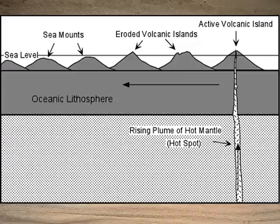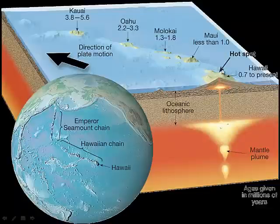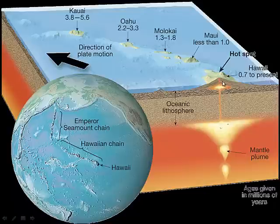Here's our hot spot bringing hot magma up through the lithosphere and creating a volcanic island. As the plate moves, this volcano moves off the hot spot and becomes extinct, and then a new volcano forms. This is exactly how the Hawaiian Islands formed. There's a hot spot in the mantle below the present island of Hawaii, and the other Hawaiian Islands at one point were directly over the hot spot. As the Pacific plate moved, they moved away from the hot spot and became extinct volcanic islands.